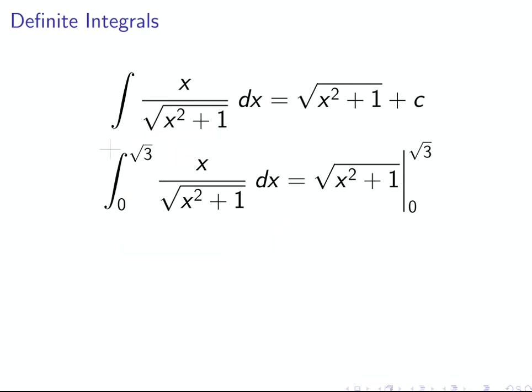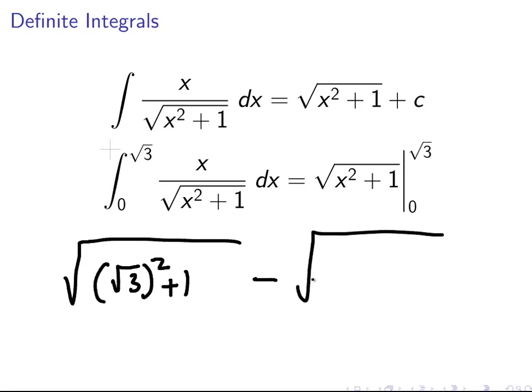So the limits are the square root of 3 and 0. So what we're going to do is evaluate it for the square root of 3. So the square root of the square root of 3 squared plus 1. And we're going to subtract the evaluation for the lower limit. And that is 0 squared plus 1.